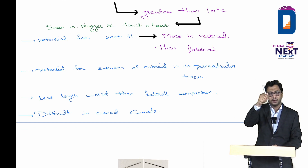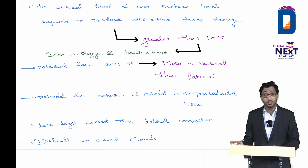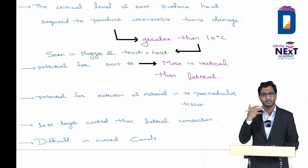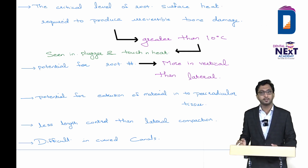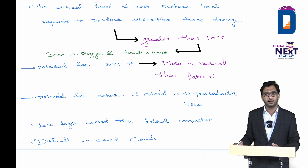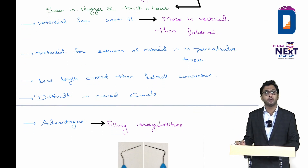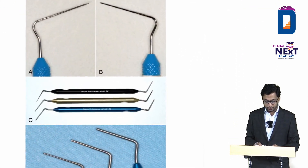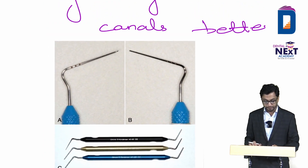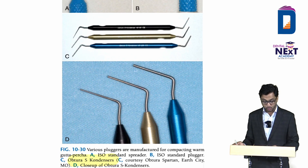Another disadvantage of warm vertical condensation is difficulty in curved canals, because pluggers are not very flexible. To summarize the disadvantages: potential for root fracture, potential for extrusion, poor length control, and difficulty in curved canals. The advantage is three-dimensional filling of irregularities and accessory canals, much better than cold lateral compaction. The pluggers used are called Obtura S condensers.